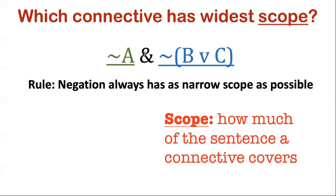The blue negation is governing a complex sentence chunk, so its scope is wider. The widest scope connective is the conjunction, because it operates on the entire sentence — one conjunct is the negated chunk and the other is the disjunction part. There is always one connective that governs the entire sentence — that's called the main connective. The main connective is always the connective with widest scope.